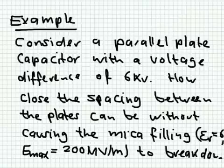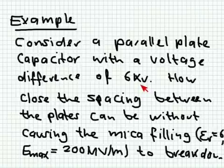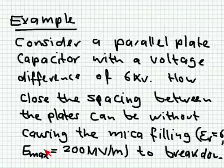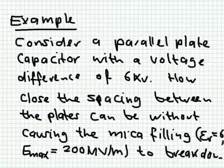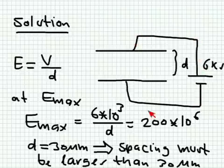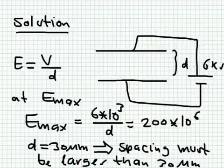Let's look at an example. We have a barrel blade capacitor with a voltage of 6 kilovolts between its terminals. We want to know how close we can bring the two blades together without causing the mica filling to break down. The mica has epsilon equal to 6 and a maximum electric field of 200 megavolts per meter. The 6 kV is connected between the two blades and d is the separation.